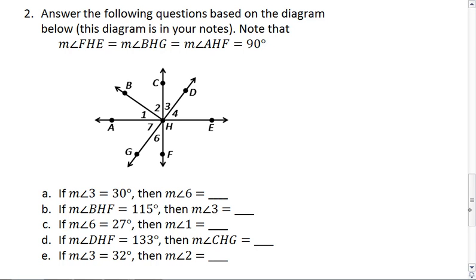You need to note that the measure of angle FHE equals the measure of angle BHG, which equals the measure of angle AHF. And those all equal 90 degrees. Based on this information and what you see in the picture, answer A through E.